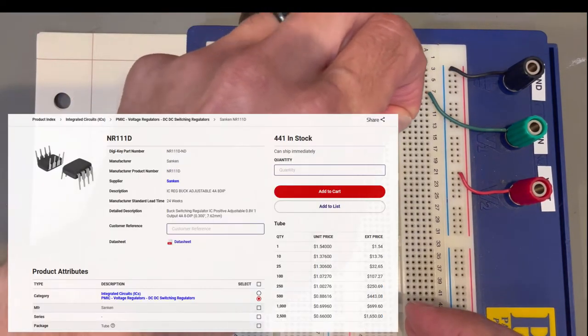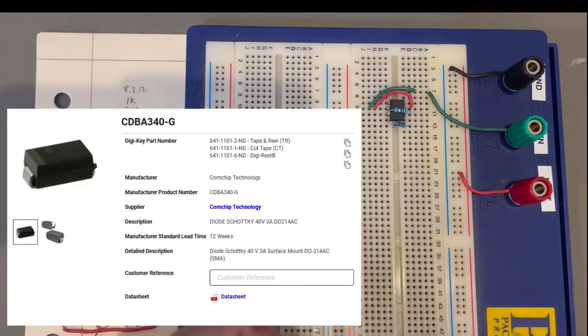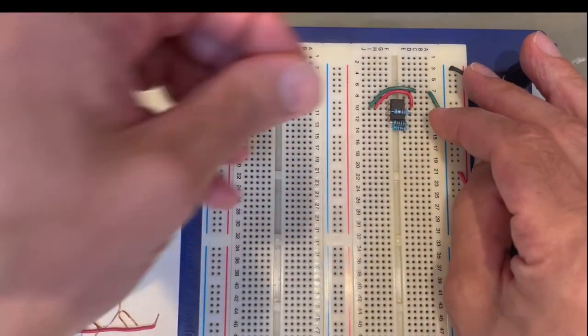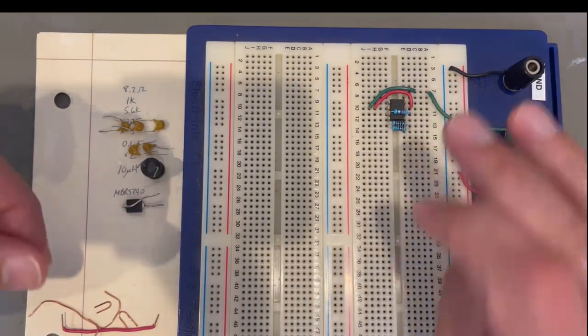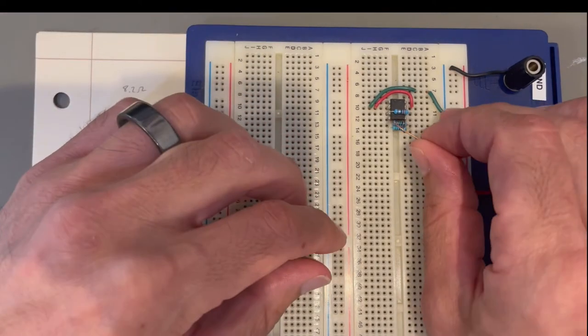Resistors, the NR111D monolithic buck converter, and also something like a 3 amp 40 volt Schottky diode. I purchased cheap kits from eBay for resistors, inductors, and capacitors. I will include the links in the description so you can get the same or similar kits.